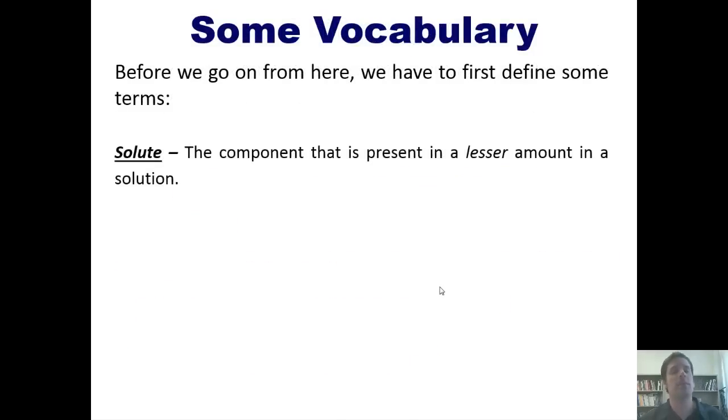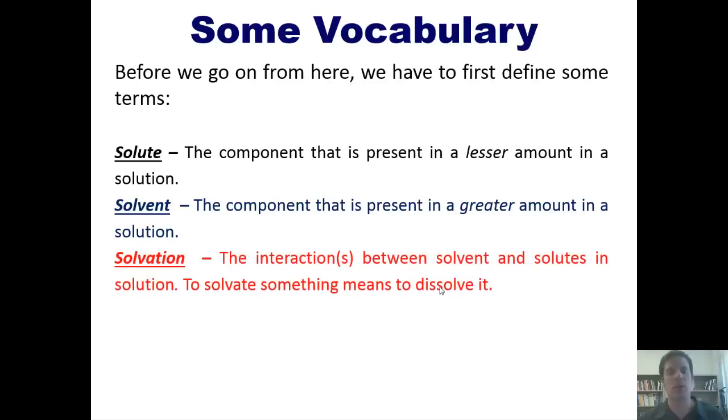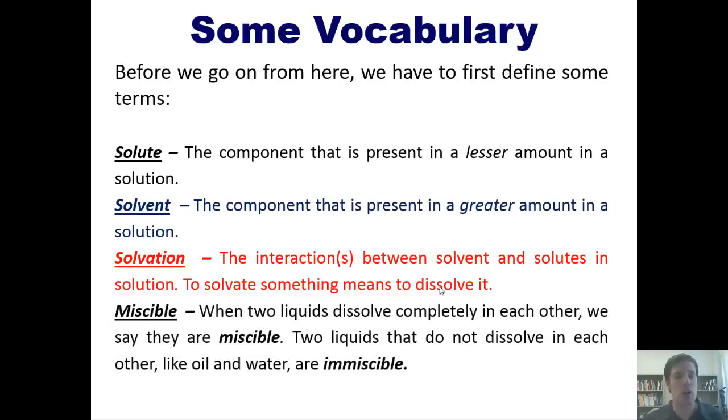Solute is the component that is present in a lesser amount in a solution. Solvent is the component that is present in a greater amount in a solution. Solvation is the interaction between solvents and solutes in a solution. To solvate something means to dissolve it. And lastly is the word miscible. When two liquids dissolve completely in each other, we say they are miscible. Two liquids that do not dissolve in each other, like oil and water for example, are said to be immiscible.